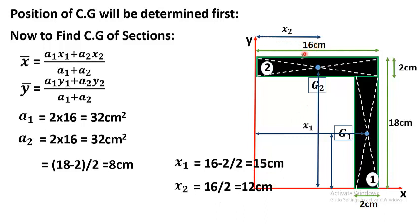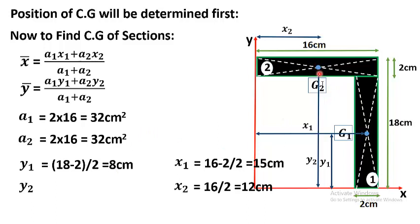x2 is the distance of the centroid of figure 2 from the y-axis: x2 = 16 ÷ 2 = 8 centimeters. y1 is the distance along the y-axis to the centroid of figure 1: y1 = (18 − 2) ÷ 2 = 8 centimeters. y2 is the distance of the centroid of figure 2 along the y-axis: y2 = 5 + 12/2 = 11 centimeters — wait, it is calculated as (some base + half height), giving y2 = 11 centimeters.